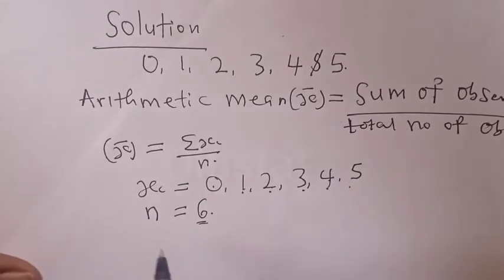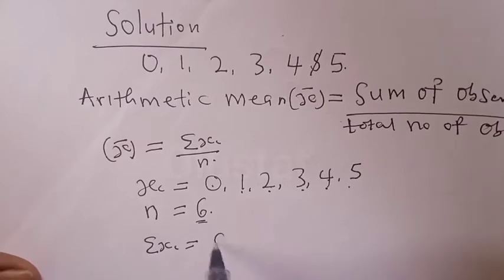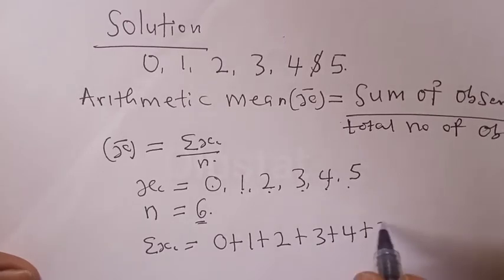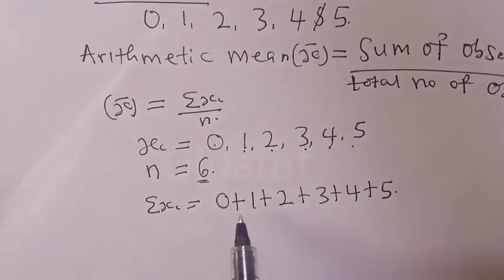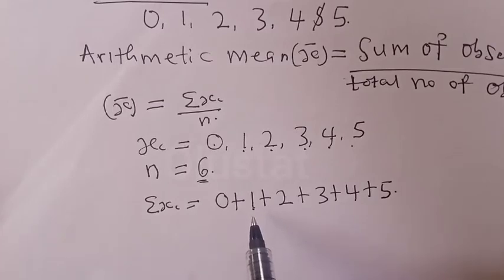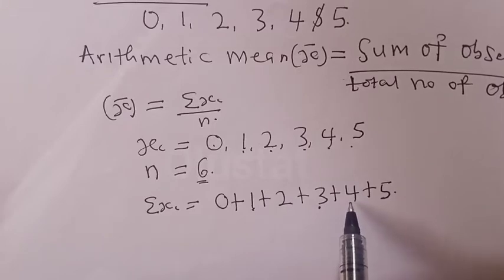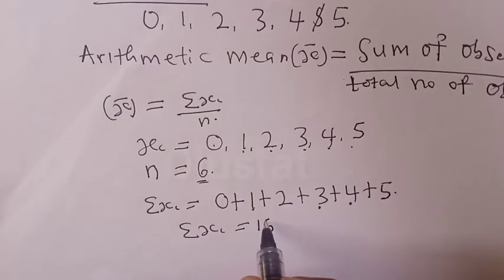Therefore our summation of xi is 0 plus 1 plus 2 plus 3 plus 4 plus 5. This implies 0 plus 1 is 1, plus 2 is 3, plus 3 is 6, plus 4 is 10, plus 5 is 15. Summation of xi is equal to 15.